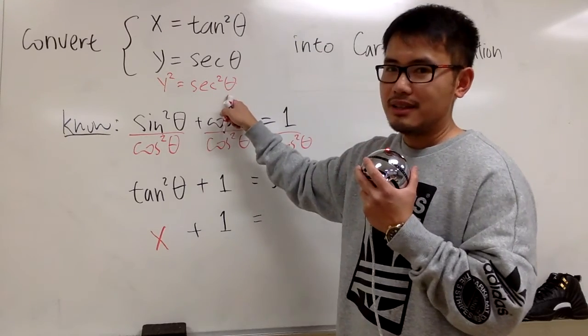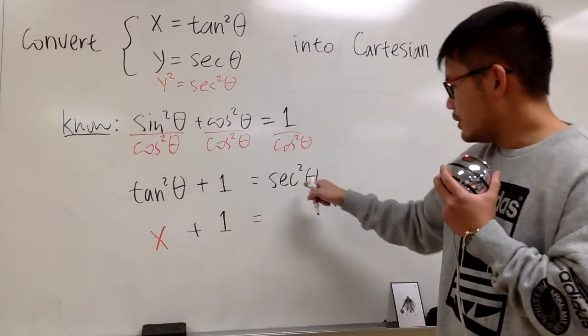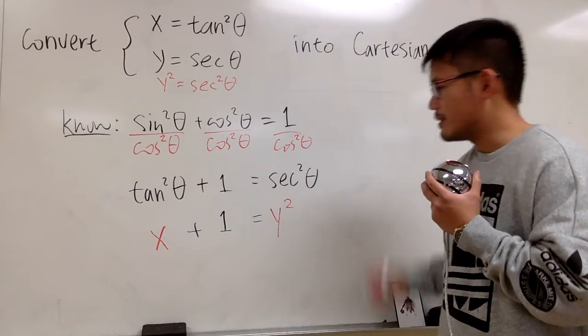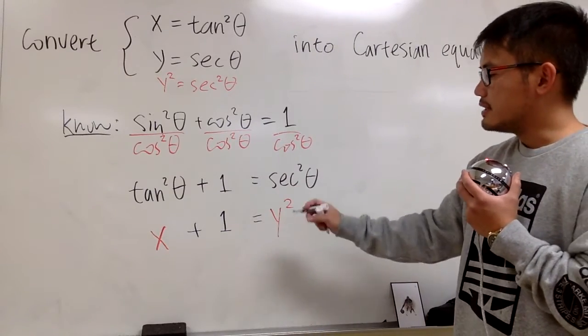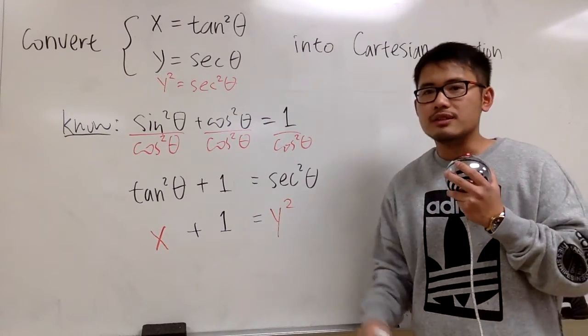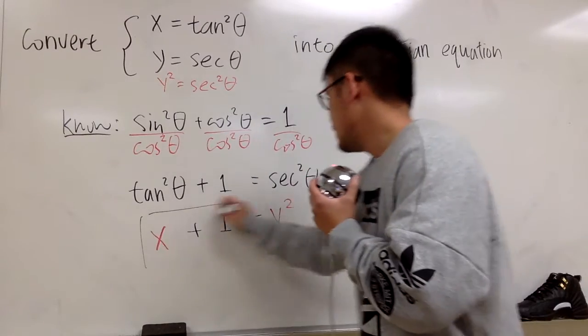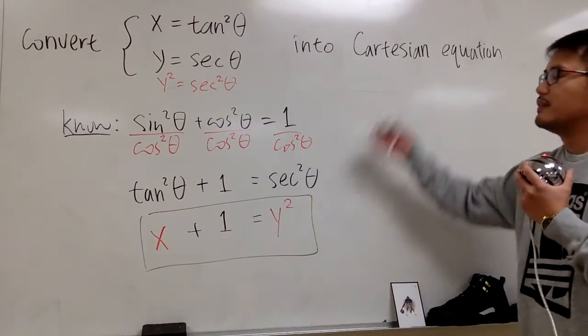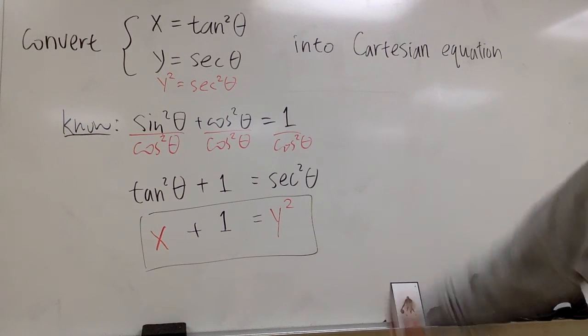So we can just plug in this into there, y squared. x plus 1 is equal to y squared, this is going to give you a sideways parabola. This will be the answer for this Cartesian equation. That's it.